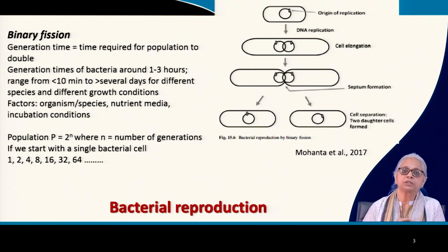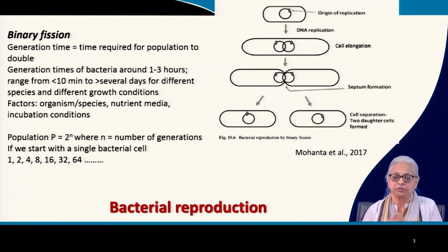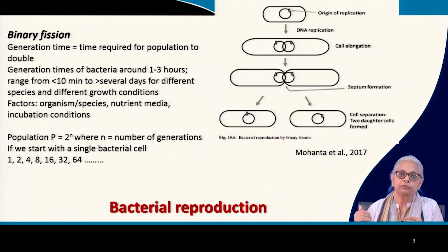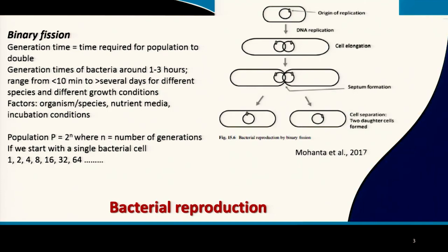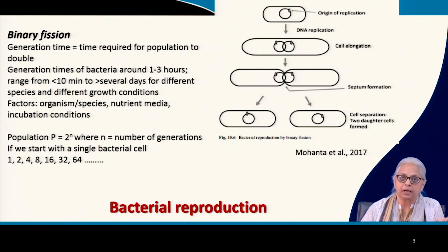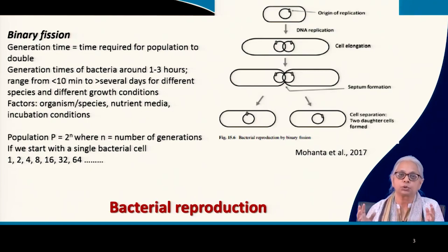If we want to quantify the growth of bacteria in the lab or in the environment, the first thing is generation time — the time required for a single cell to become 2 cells. So 1 goes to 2, 2 goes to 4, 4 to 8, 8 to 16, and so on. The generation time is the time required for the population to double. Generation times for bacteria can be around 1 to 3 hours, or from less than 10 minutes to several days depending on the species and growth conditions.